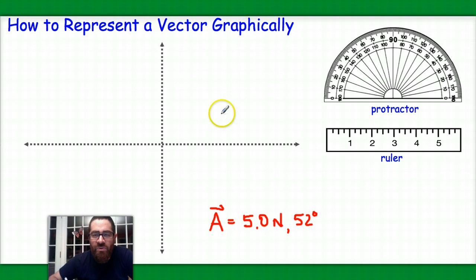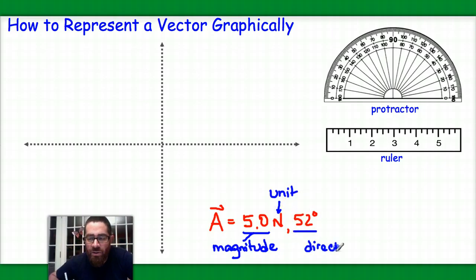First thing we want to do is recognize the different parts of a vector. I've used this little hat notation to denote that it's a vector, therefore it has both a magnitude, which is this here, so we'll call that the magnitude. The magnitude is typically the quantity or the number associated with a vector. Of course, it also has a unit. In this case, it's newtons, but the unit describes what type of a vector it is.